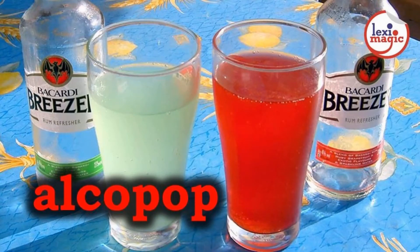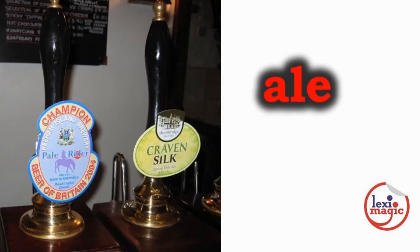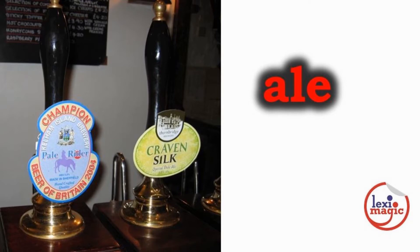Alcopop is a sweet fizzy alcoholic drink with a very low alcoholic content. Bacardi Bruiser is a popular brand of alcopop. Ale is a warm fermented beer with a fruity taste. Historically, gruit was used as a bittering agent in ale instead of hops.